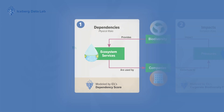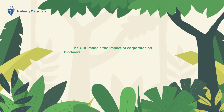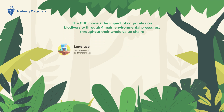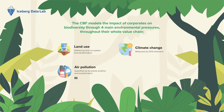The CBF models the impact of corporates on biodiversity through four main environmental pressures throughout their whole value chain: land use, defined by land occupation and transformation; climate change, measured by GHG emissions; air pollution, quantified by terrestrial acidification and eutrophication; and water pollution, measured through the release of organic and inorganic chemicals in fresh water.